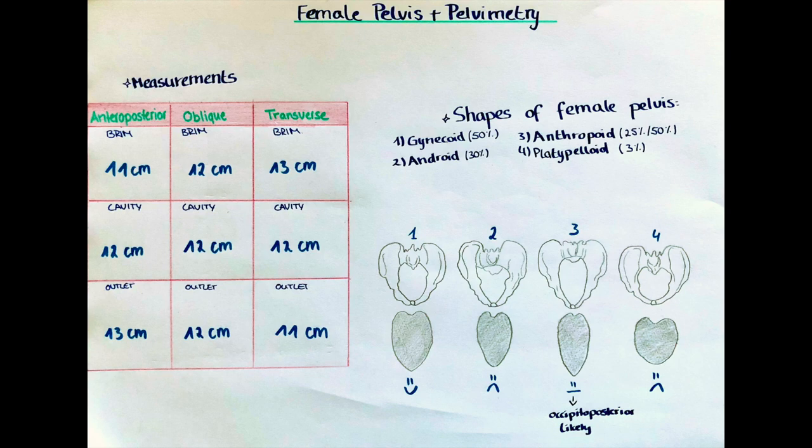Now I want to talk about the types of pelvis that can be observed. That describes the shape of the cavity, which can be more round, oval, narrow, or flat. As you can imagine, a wider, rounder, and more spacious shape makes natural birth easier than a flatter, more oval shape.